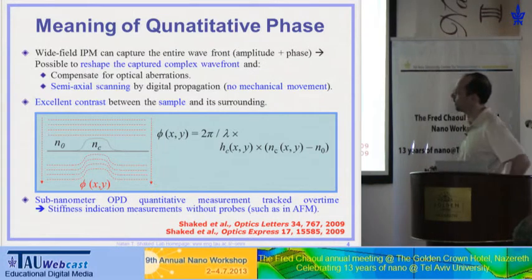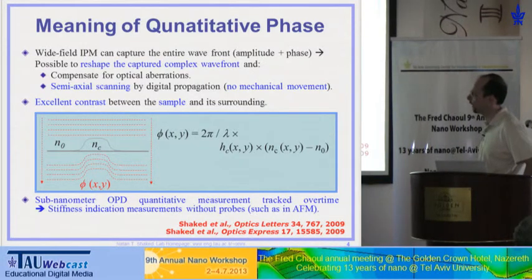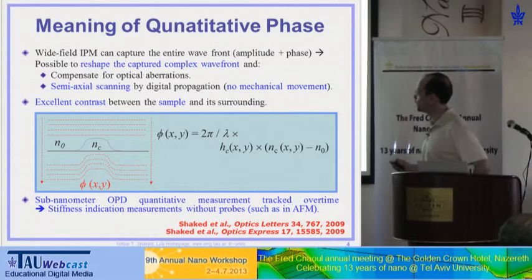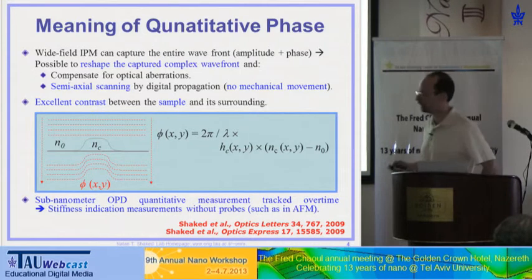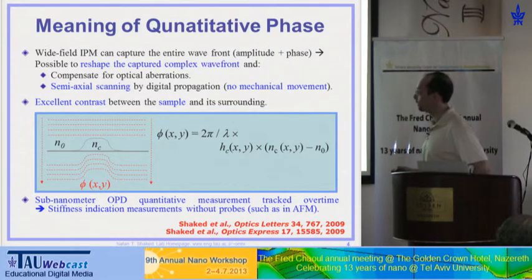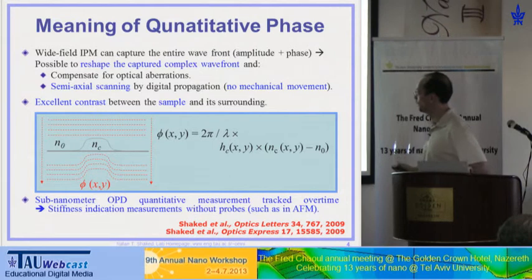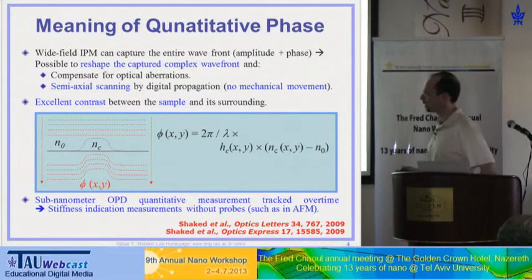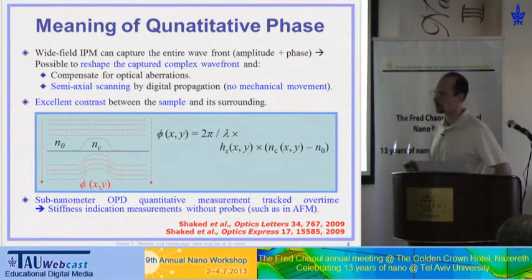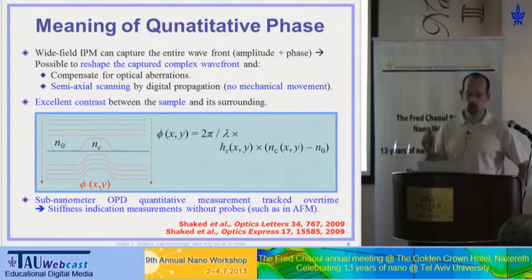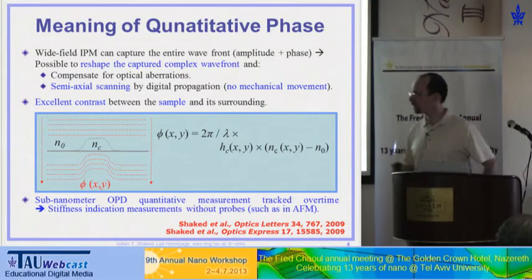I immerse the sample in a medium or have air, so I know the refractive index of the medium. I am actually measuring the difference between the refractive index of the sample — which might be a cell or an optical element — and the refractive index of the medium, which might be water or air. This difference is multiplied per each spatial point by the physical thickness of the sample. If the refractive index of the sample is known, I am able to get a physical thickness map — a two-dimensional map giving the physical thickness at each point.